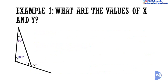Example 1: What are the values of X and Y? The sum of the three interior angles in a triangle is equal to 180 degrees. Therefore, 100 degrees plus 30 degrees plus X degrees is equal to 180 degrees. It follows that X is equal to 180 minus 100 minus 30, so X is equal to 50 degrees.